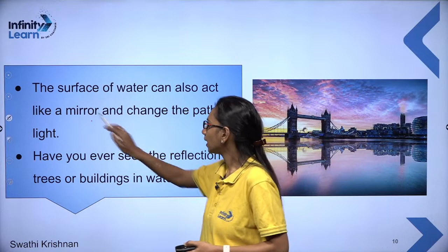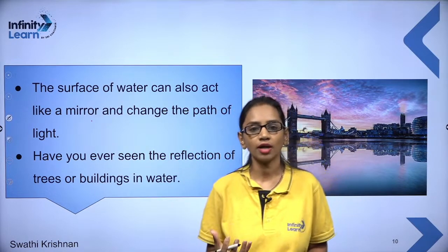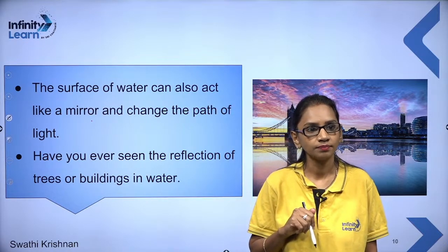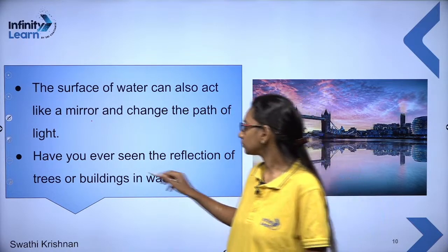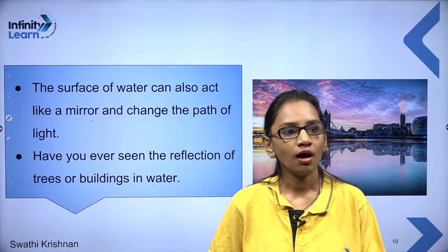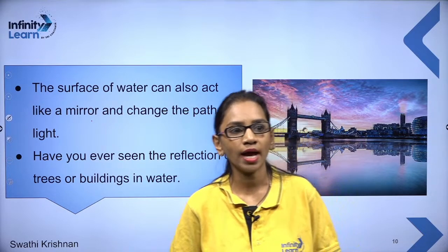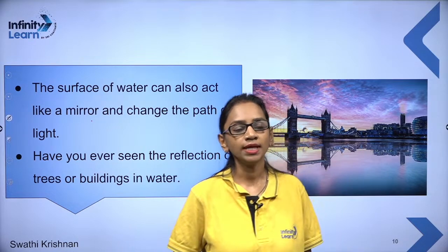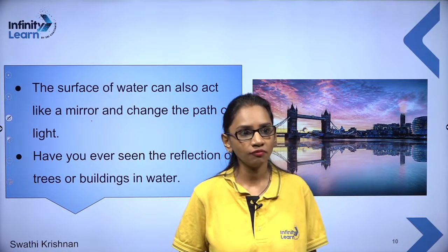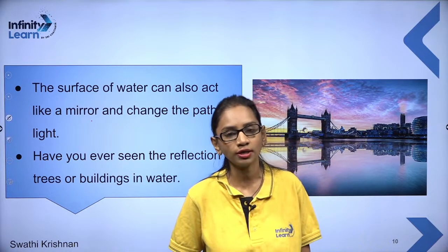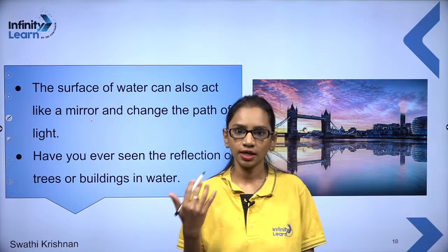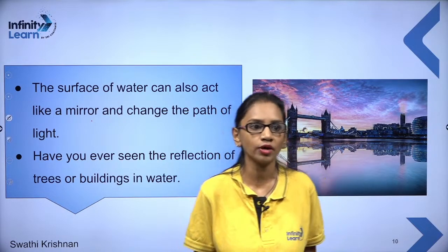In nature, water surface also acts as a mirror and changes the path of light. Have you ever seen the reflection of trees or buildings in water? That is a very normal phenomenon — water can also act like a mirror and change the path of light, so basically in reflection, the path of light changes. Regarding how sunlight reaches the earth — light does not need a medium to travel. Sound needs a medium for propagation, but that is not valid for light. Light can travel in vacuum as well, which is why sunlight reaches earth even though space has no air particles.